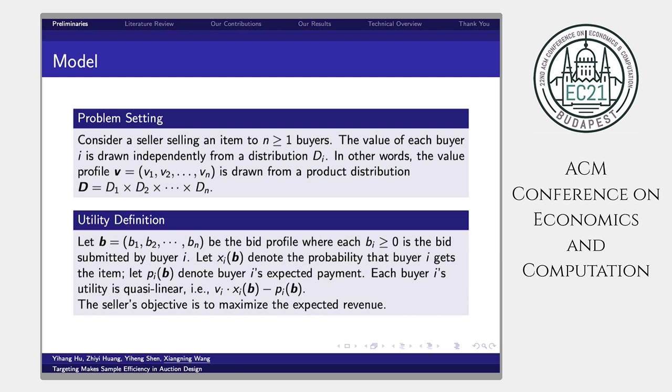Let xi denote the probability that bi gets the item. Let pi denote buyer i's expected payment. We use a quasi-linear utility function. That is to say, each buyer i's utility is expected value minus expected payment. The seller's utility is simply revenue, and the seller's objective is to maximize the expected revenue.